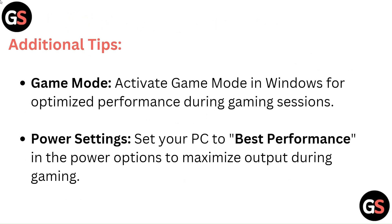Additional Tips — Game Mode: Activate Game Mode in Windows for optimized performance during gaming sessions. Power Settings: Set your PC to best performance in the Power options to maximize output during gaming.